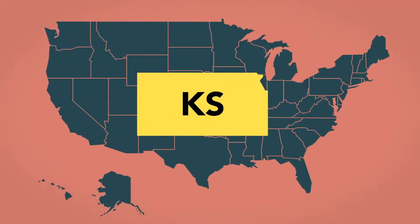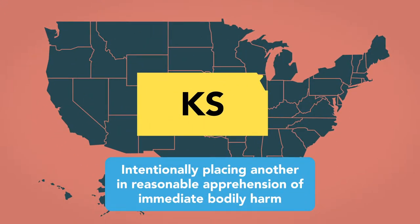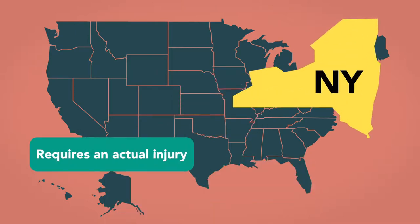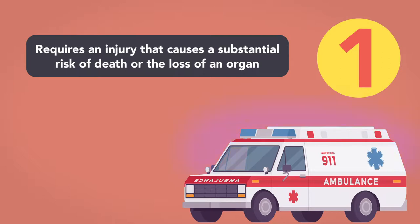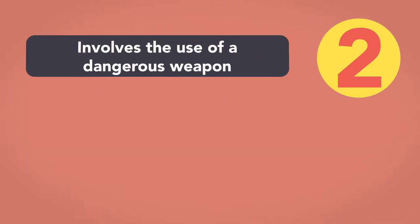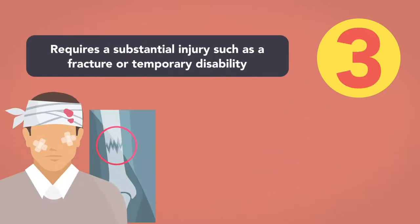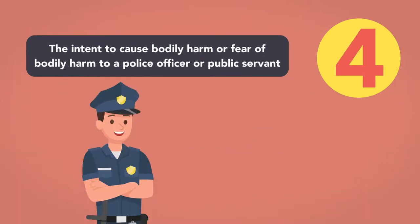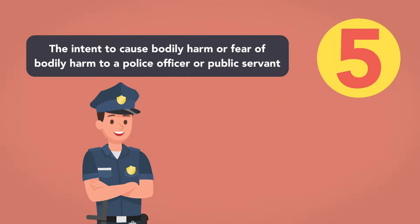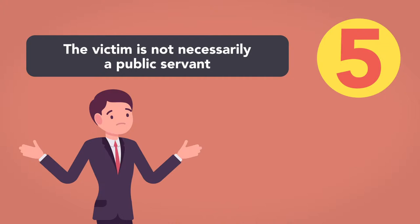Kansas defines assault as intentionally placing another in reasonable apprehension of immediate bodily harm, whereas New York requires an actual injury. Minnesota separates assault crimes into five degrees. First degree assault requires an injury that causes a substantial risk of death or the loss of an organ. Second degree assault involves the use of a dangerous weapon. Third degree assault requires a substantial injury, such as a fracture or temporary disability. Fourth degree assault is the intent to cause bodily harm or fear of bodily harm to a police officer or public servant, and also includes assaults motivated by bias. Fifth degree assault is the same as fourth degree, except that the victim is not necessarily a public servant.